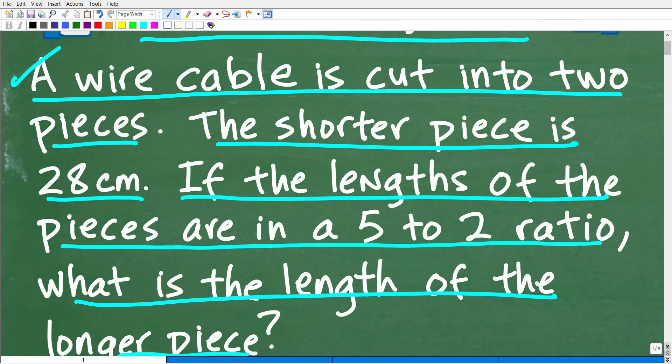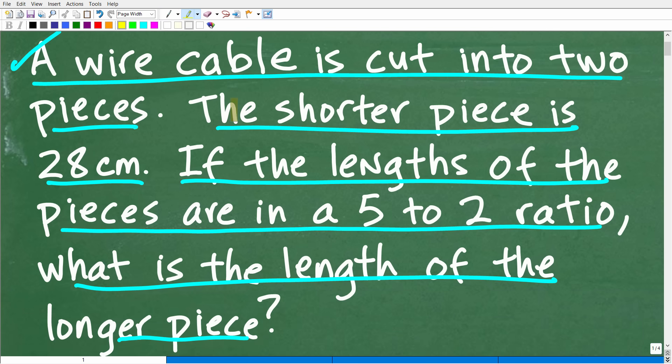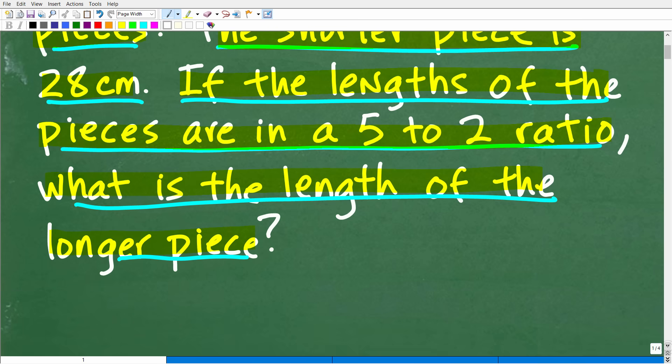Okay, so let's go ahead and just take one more look at this question before I show you the answer. So a wire cable is cut in two pieces. The shorter piece is 28 centimeters. If the length of the pieces are in a 5 to 2 ratio, what is the length of the longer piece? All right, so let's go ahead and see the answer right now.